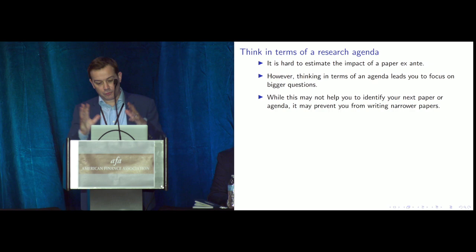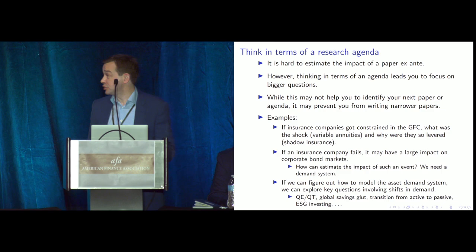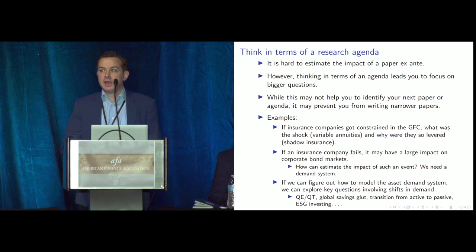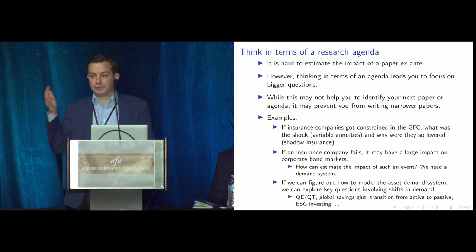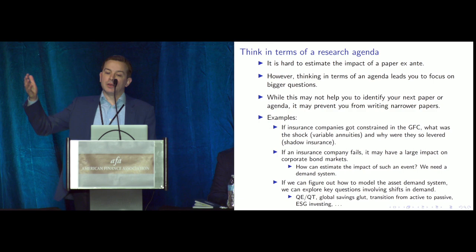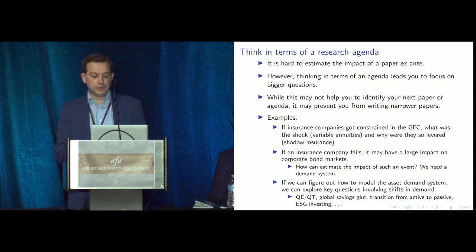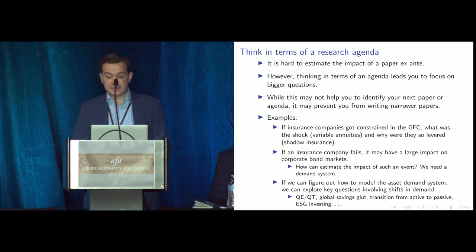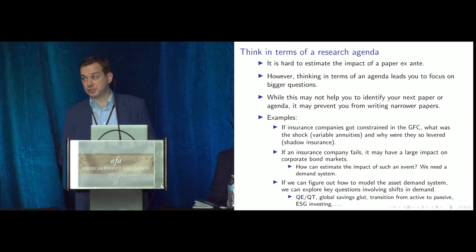To make this tangible: during the financial crisis, some insurance companies showed very odd pricing behavior on a narrow set of contracts. The most natural explanation was financial constraints. That led us to ask what shock got them constrained, which led us to work on variable annuities. Then the question arose: why were these companies so levered? One reason was off-balance-sheet activities we call 'shadow insurance.' From just that one initial idea, we knew the other two papers would follow.